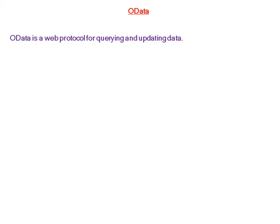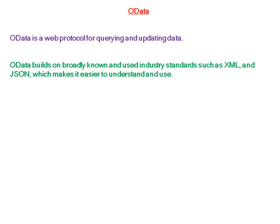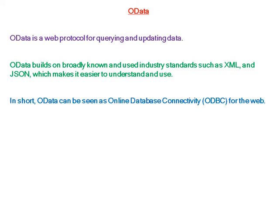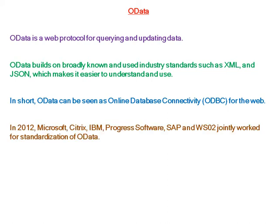OData is a web protocol for querying and updating data. It builds on broadly known and used industry standards such as XML and JSON, which makes it easier to understand and use. In short, OData can be seen as online database connectivity for the web.